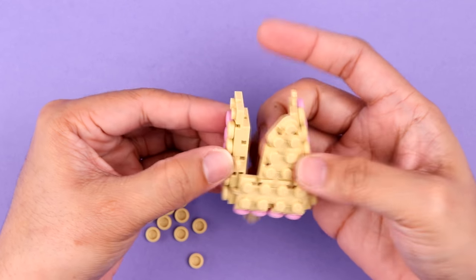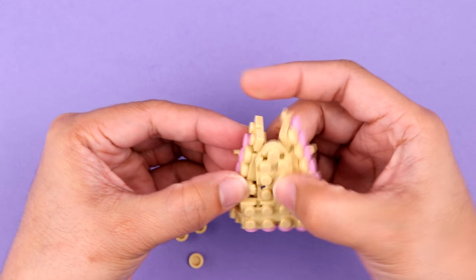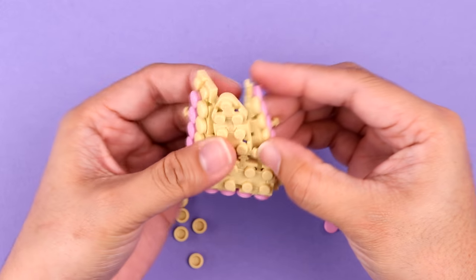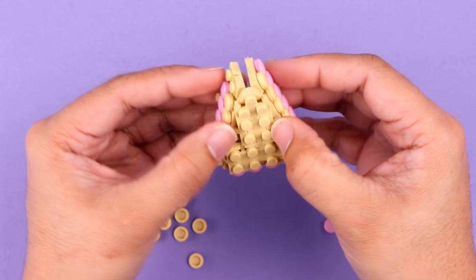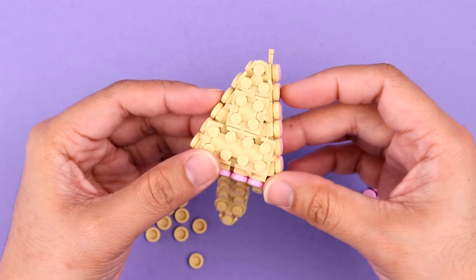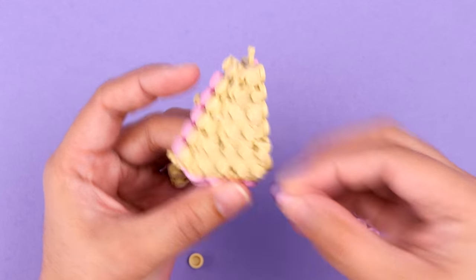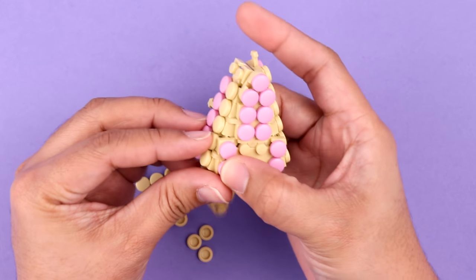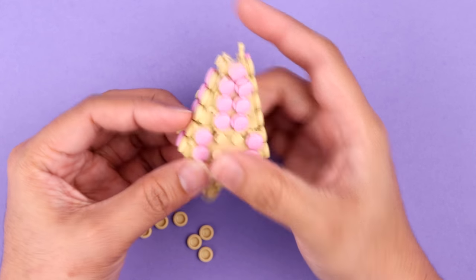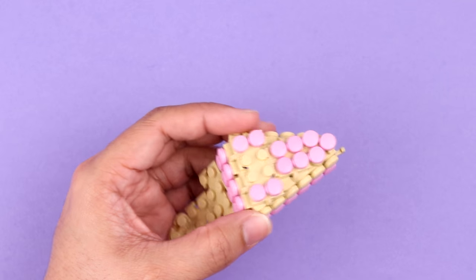So use your thumb and just guide the tendon in, and then we're going to lock them off with domes. We leave a 2x2 stud area free. That's where our little strawberry slice is going to go later.